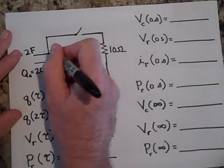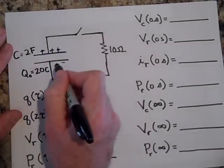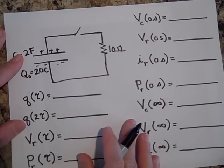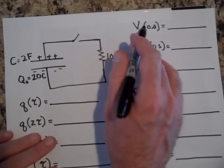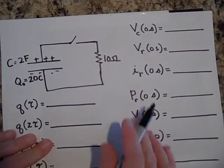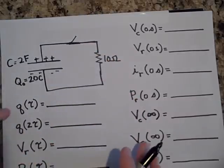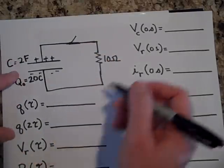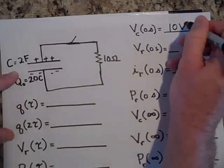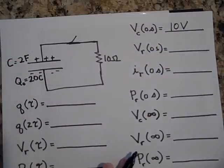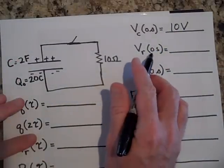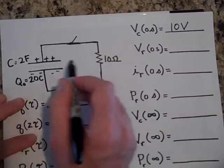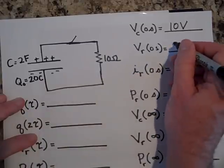Now we have a capacitor we're going to discharge. It has an initial charge of 20 Coulombs. We close the switch. At t equals zero, what is the voltage across the capacitor? The voltage is Q over C, so it's 20 Coulombs divided by 2 Farads, which equals 10 volts. The voltage across the resistor at t equals zero also has to match — it's 10 volts as well.